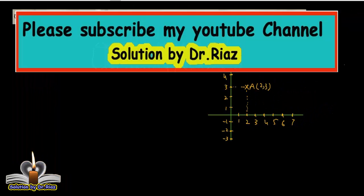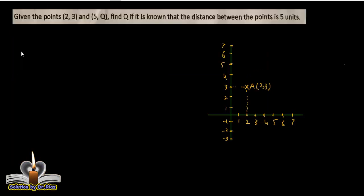In this video, I want to solve the given numerical problem. Given the points (2, 3) and (5, Q), find Q if it is known that the distance between the points is 5 units.